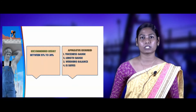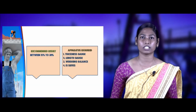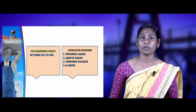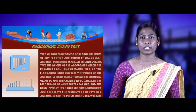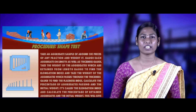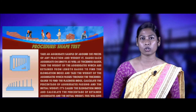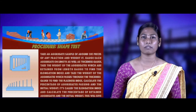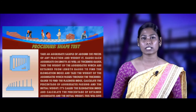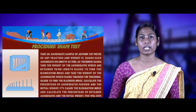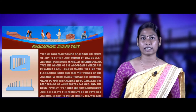The recommendation result for shape test: the value should be in the range of 15% to 30% according to the area of use. Apparatus required: thickness gauge, length gauge, sieves, and weighing balance. Procedure: take a sample of 200 pieces of aggregate of any fraction and weigh it. Gauge each aggregate using both length gauge and thickness gauge. Take the weight of aggregate retained on the length gauge for the elongation index. Take the weight of aggregate passing through the thickness gauge for the flakiness index. Calculate the percentage of aggregate passing or retained on the gauges relative to the initial weight.